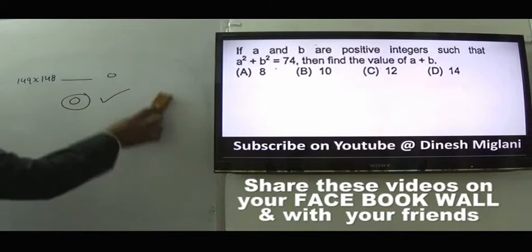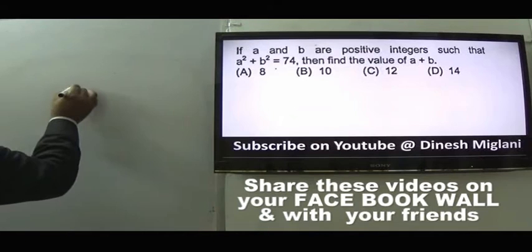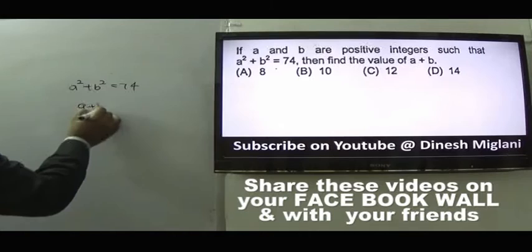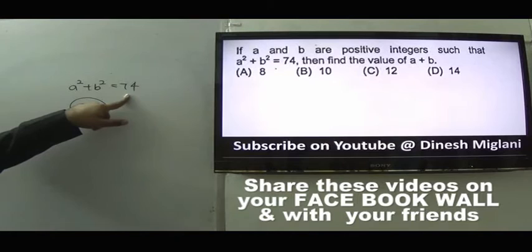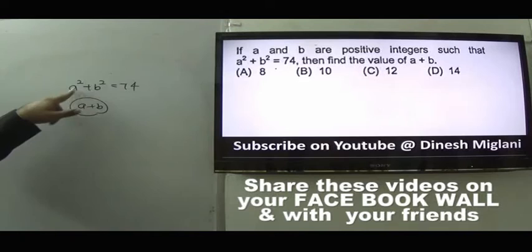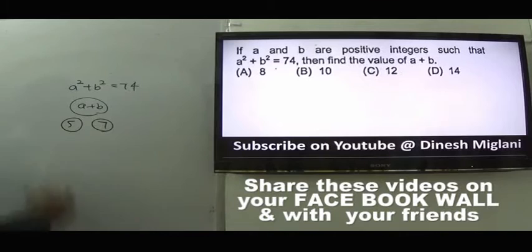Question 30: A and B are positive integers such that A² + B² = 74. Testing values: 5² + 7² = 25 + 49 = 74. So A = 5, B = 7. A + B = 12. Answer is 12.